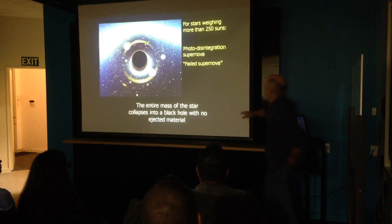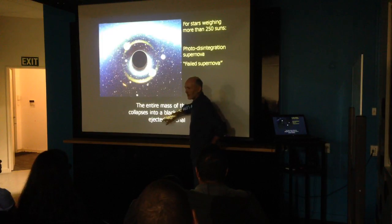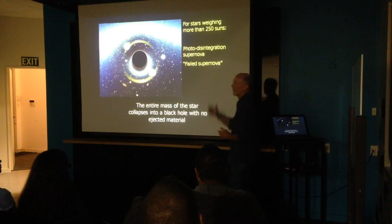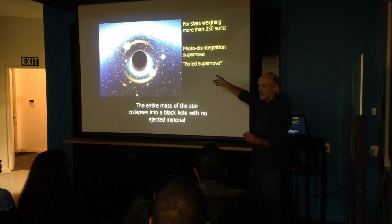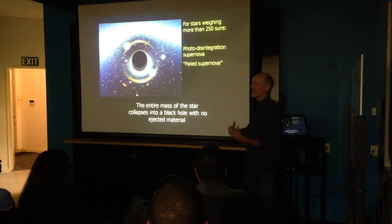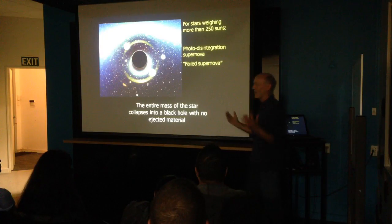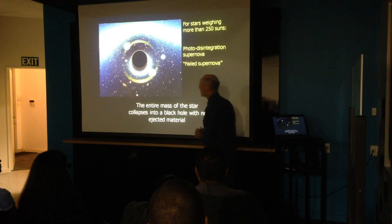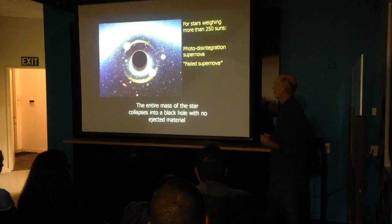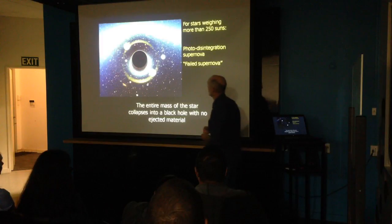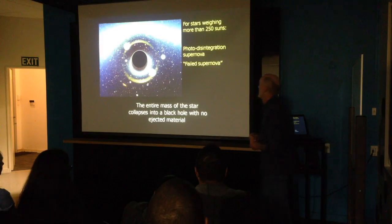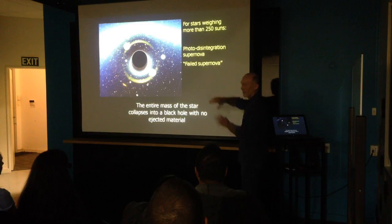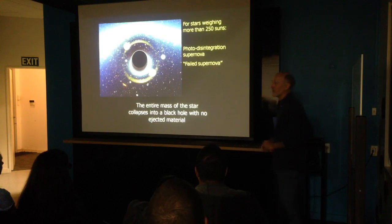When that happens, no material is injected back into the interstellar environment. So if all the early stars were like this, we probably wouldn't be here — we're only here because stars existed long enough to create the heavy elements, spread them through the universe, and that's what we're made of. All the carbon in our bodies came from stellar explosions originally.